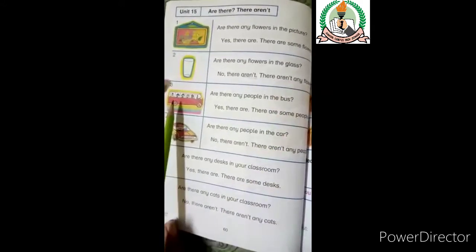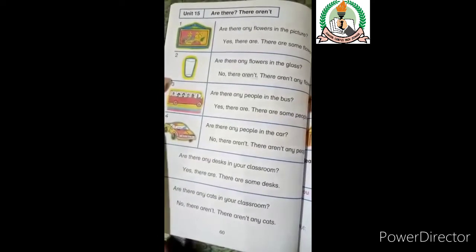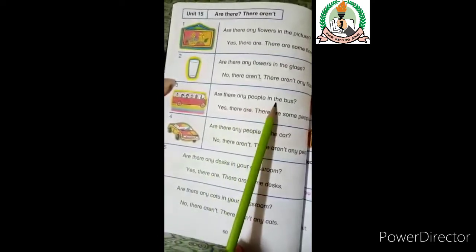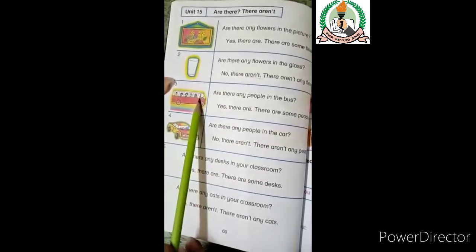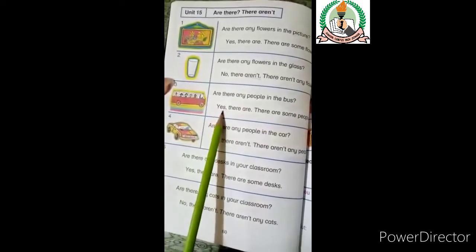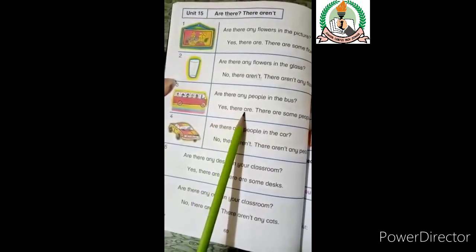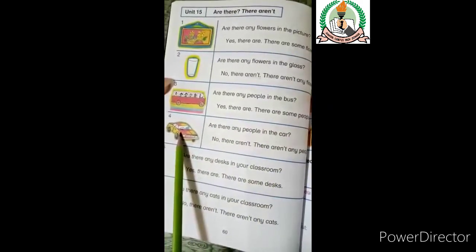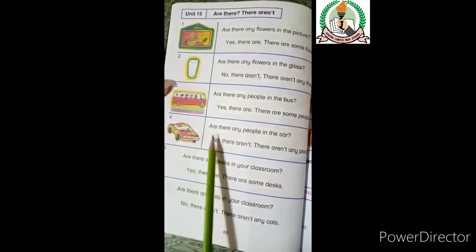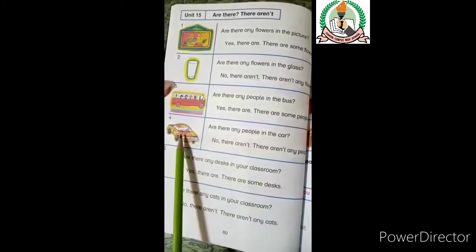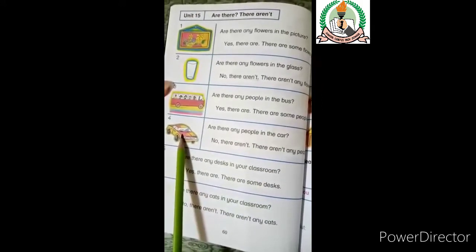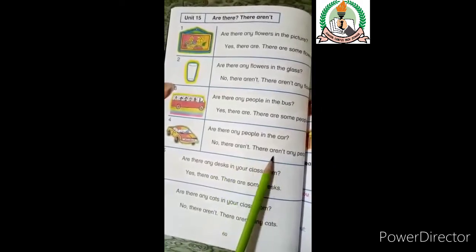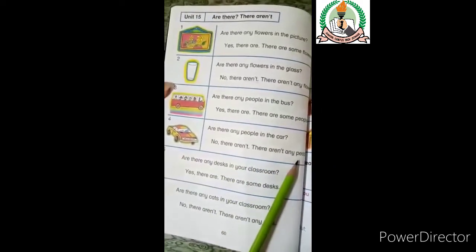For example, are there any people in the bus? You can see people here, so you say: Yes, there are. There are some people. Now look at the car — are there any people in the car? No one is present here. No, there aren't. There aren't any people.